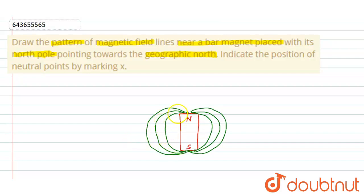Okay, here the magnetic field is moving from north pole to south pole. So when there is a north pole pointing towards the geographic north, it will be indicated like this.